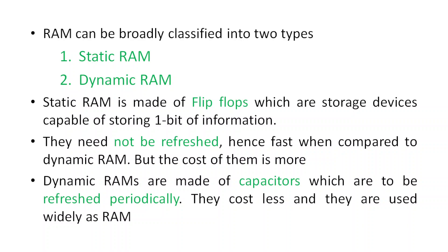Static RAM is made out of flip-flops — small storage devices capable of storing one bit of information. Dynamic RAM is made out of capacitors. Both need to be refreshed periodically. Static RAM is faster than dynamic RAM but costs more. Usually the RAM inside a computer is dynamic RAM — currently DDR4 (double data rate 4).